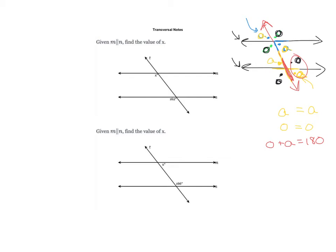If I look here we have m parallel to n, and we want to find x. When I'm first starting out, I might label all the o's and a's. It looks like x is an obtuse angle, and these other two are acute angles.